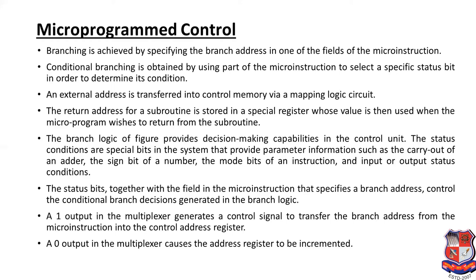The work of the micro program sequencer involves four different parts of control memory: to transfer the external address, to load, and then to execute the micro instruction. The return address for a subroutine is stored in a special register whose value is then used when the micro program returns from the subroutine. The branch logic provides decision-making capability in the control unit. Status conditions of special bits in the system provide parameter information such as carry out of an adder, the sign bit of a number, the mode of an instruction, and input/output status conditions.